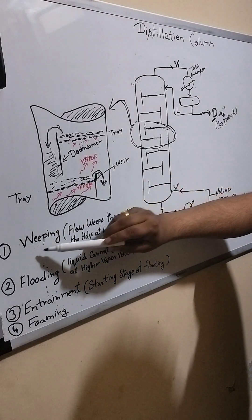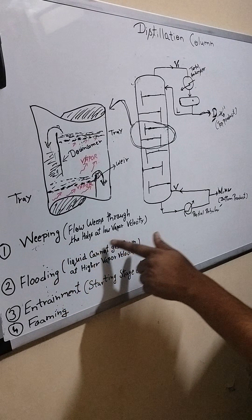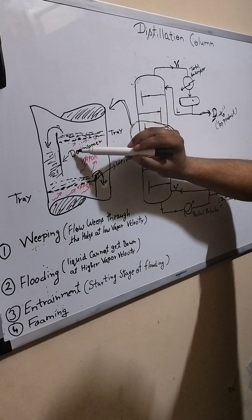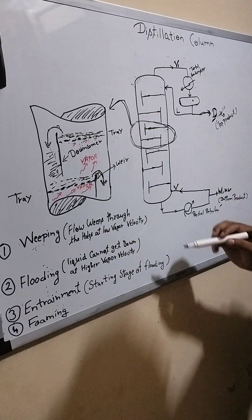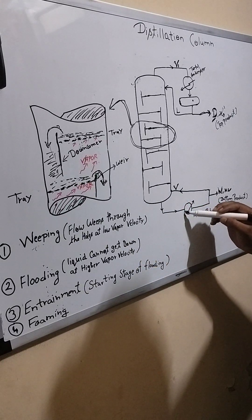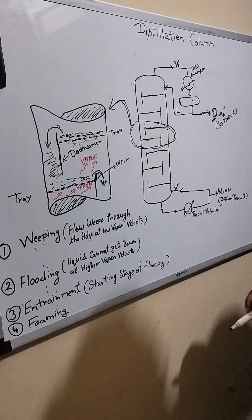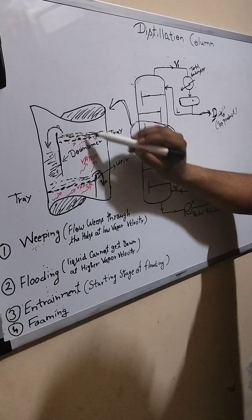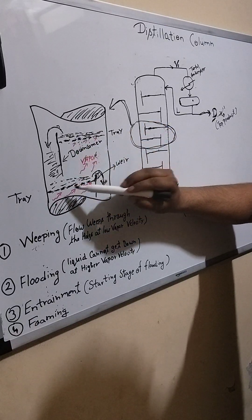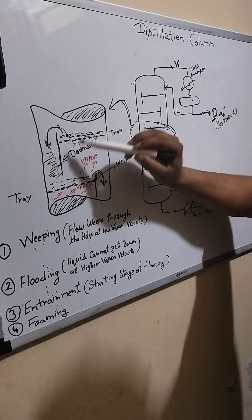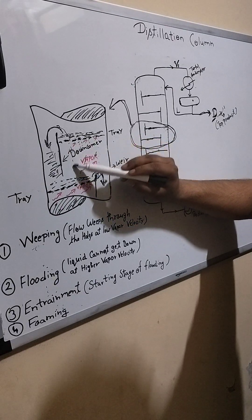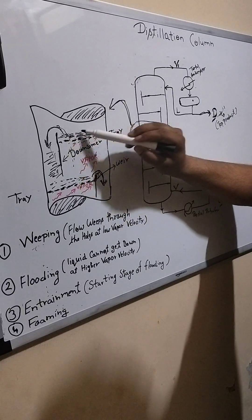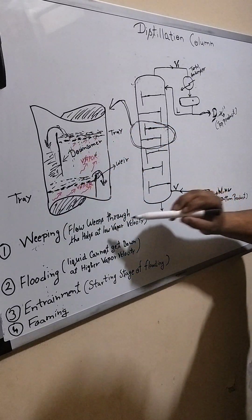When weeping occurs, the reason of weeping is: in weeping, what happens? Liquid weeps through the holes at low vapor velocity. Due to the low vapor velocity, suppose your steam is not sufficient to vaporize the certain amount of vapor, so vapor velocity will reduce, and liquid will just fall down from these holes. It will not come across this downcomer. It will just fall like rain through these holes. Why does it happen? It happens due to low vapor velocity.